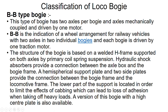Hydraulic shock absorbers provide a connection between the axle box and the bogie frame. A hemispherical support plate and two side plates provide the connection between the bogie frame and the locomotive frame. The lower part of the support is located in order to limit the effects of gyving, which can lead to loss of adhesion when taking off heavy loads. A version of this bogie with a high center plate is also available.